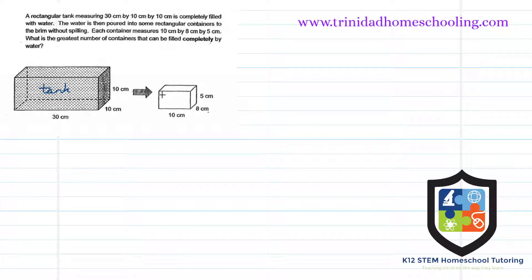These are the containers here, and we're pouring to the brim without spilling. Each container measures 10 by 8 by 5 centimeters. The question asks: what is the greatest number of containers that can be completely filled by water from this tank? We need to find the number of containers that can be completely filled from the water in this tank.